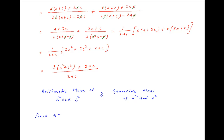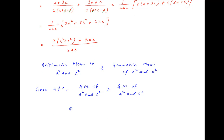However, we are given that a and c are two different numbers. It therefore follows that the arithmetic mean of a² and c² will be strictly greater than their geometric mean, because equality applies only when the two numbers are the same. Therefore, (a² + c²)/2 is strictly greater than √(a²c²), and therefore a² + c² is strictly greater than 2ac.